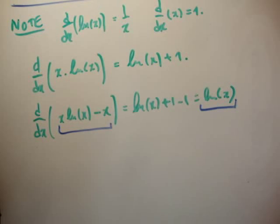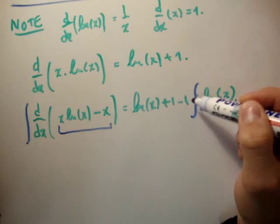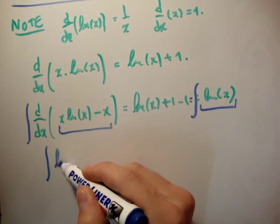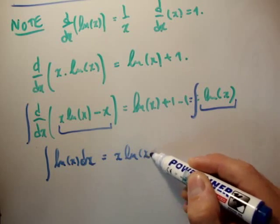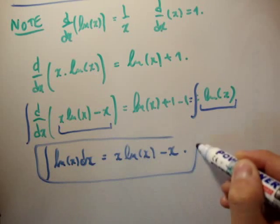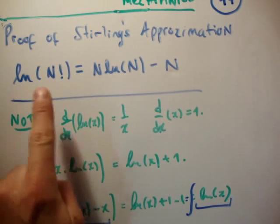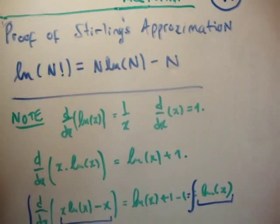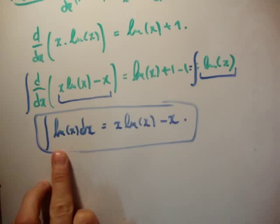By taking the following observation: if we integrate both sides with respect to x, we find that the integral of the natural logarithm of x dx is equal to x times the natural logarithm of x, minus x. Now compare that to what we have up here — we're saying that the natural logarithm of n factorial is equal to n times the natural logarithm of n, minus n. And here we have x natural logarithm of x minus x, equal to some form of an integral.